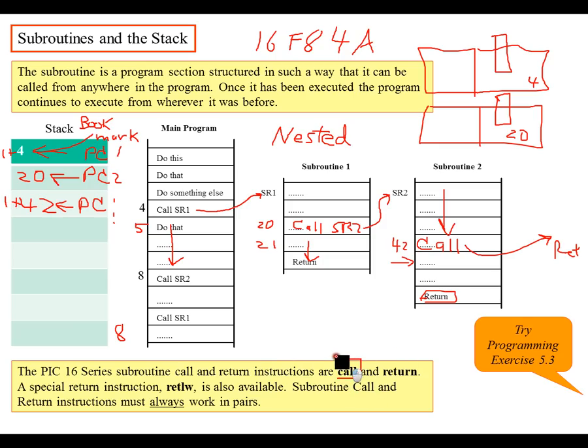So those are the two instructions that we have just learned for this lesson. We learned the call instruction and the return instruction, and they're very useful instructions to be using. I would say try programming exercise 5.3. I'll give you the solution to that later, but I want you to try it on your own in the book on page 116. That would help you out to do it on your own. This is an MPLAB programming example, you can use the simulator to do that using MPLAB X.